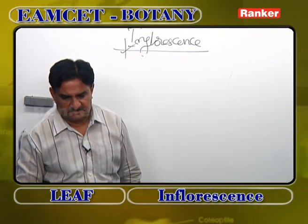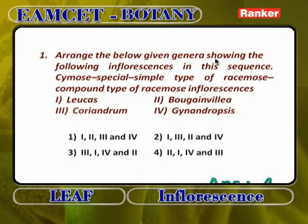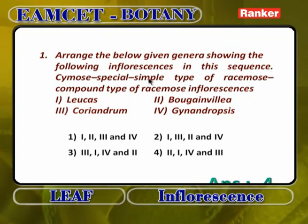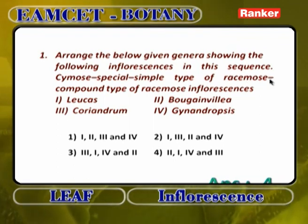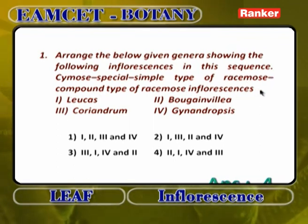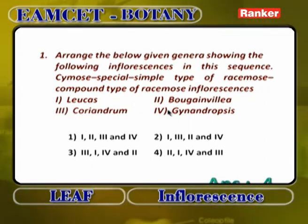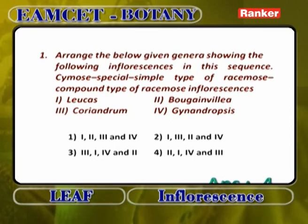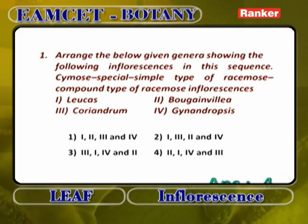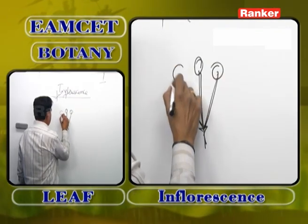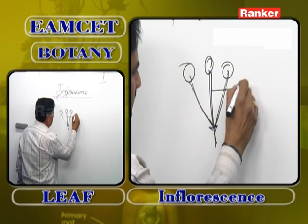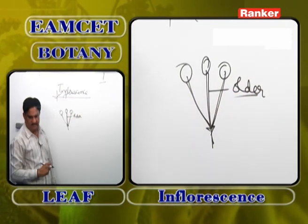Some important questions. First: arrange the following genera showing the given inflorescence in this sequence — cymose inflorescence, special inflorescence, simple type of racemose inflorescence, compound type of racemose inflorescence — for leucas, bougainvillea, coriandrum, gynandropsis. The answer is 2143. Cymose is bougainvillea (2). In cymose, a simple cyme is present: the peduncle grows definitely and ends as a flower, two lateral branches develop, they also become flowers, the central flower is the older flower.